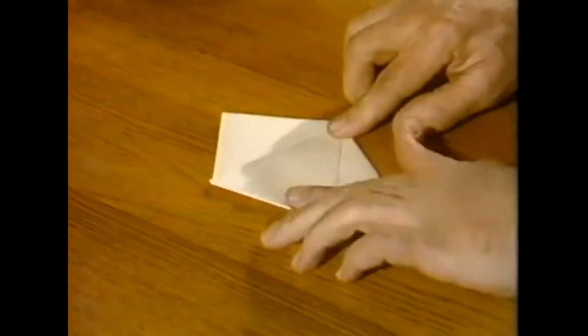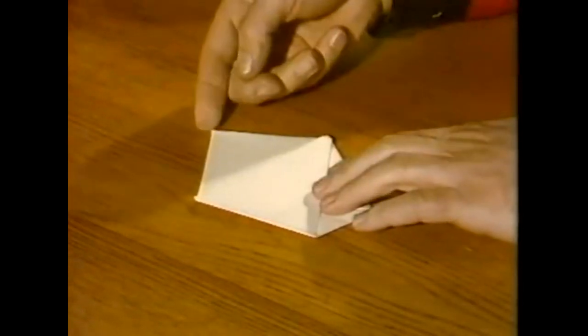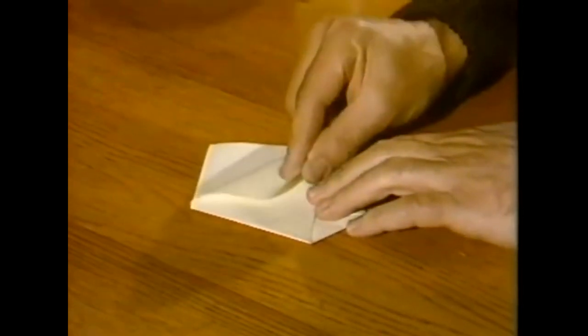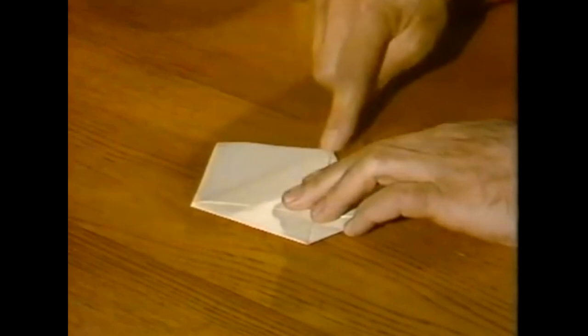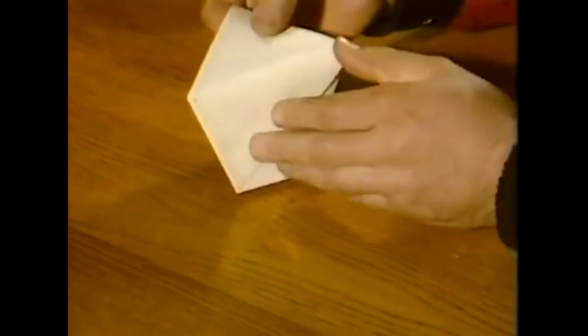It's already looking like a cup and it's not far off completion, because all you have to do then is to take this flap and fold it down, crease it again, lift it up, fold the other flap to the other side. And it really is there, the flattened cup.